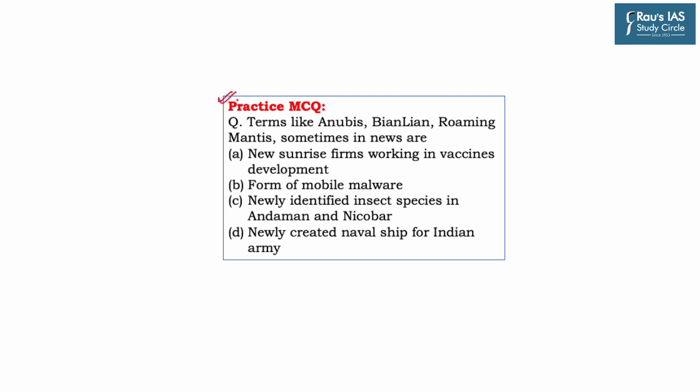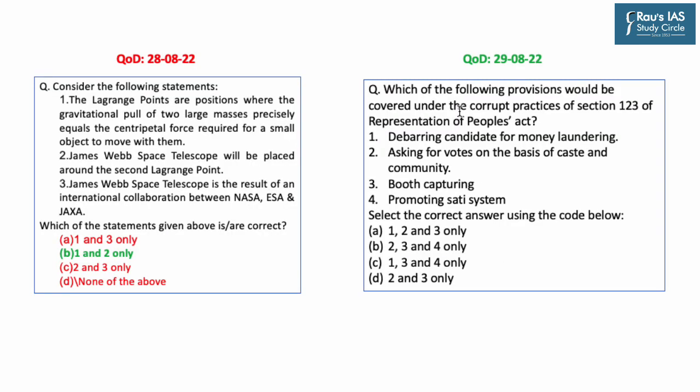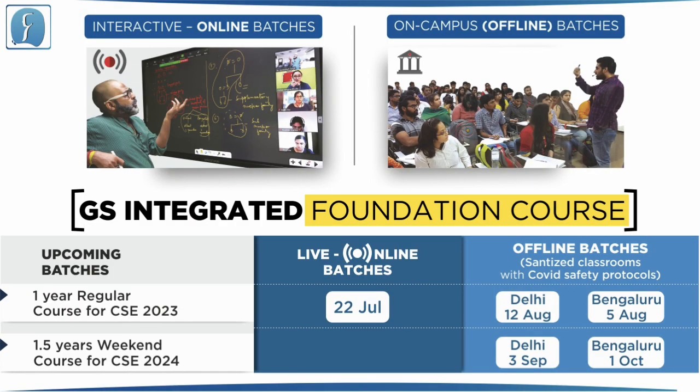A practice question based on a previous year UPSC question is provided — read it carefully and answer in the comment box. The answer to yesterday's question of the day was option B, that is, statement 1 and statement 2 are correct. Today's question of the day asks which of the following provisions would be covered under the corrupt practices of Section 123 of the Representation of People's Act — identify the correct option from four choices and comment your answer. That's all for today's Daily News Simplified. Thank you.